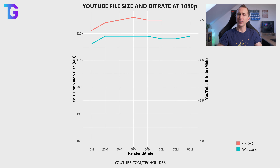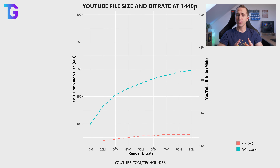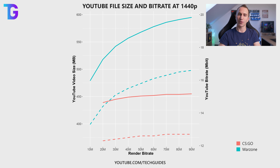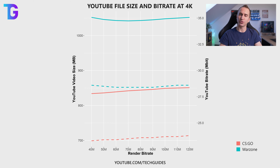At 1080p, the final file size and encoded bitrate on YouTube doesn't significantly increase when you increase the target bitrate of your rendered original video. What's really exciting to see is that YouTube increases the bitrate at 1440p when you increase the bitrate of your original rendered video, and the overall file size also significantly increases comparing a 10 megabit to a 90 megabit rendered 1440p video — which explains the increase in visual fidelity. This is much more apparent for Warzone, which is much more difficult for YouTube to encode. Finally, the bitrate YouTube assigns a 4K video does not significantly increase when increasing the bitrate of the original video.